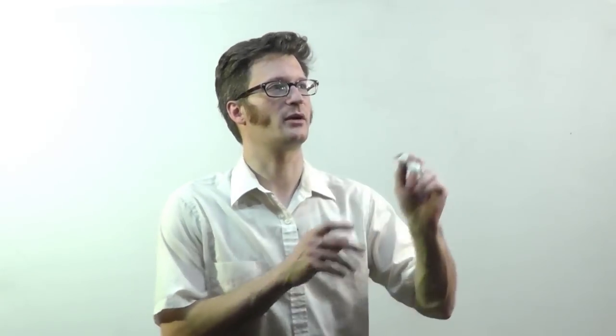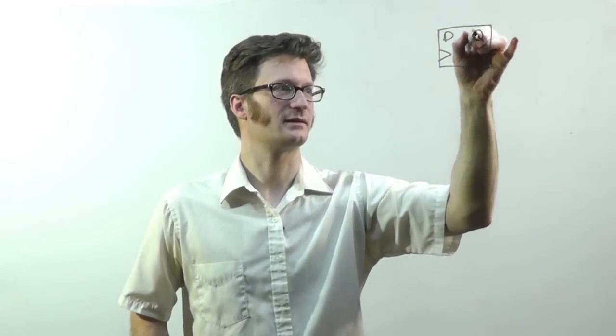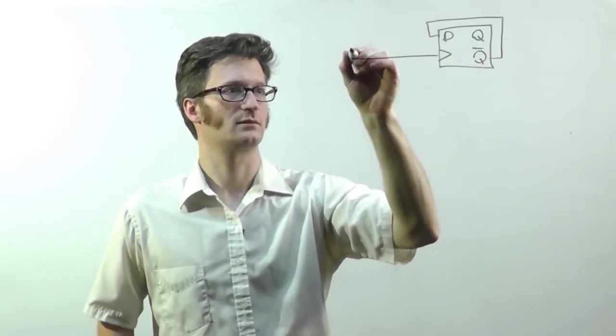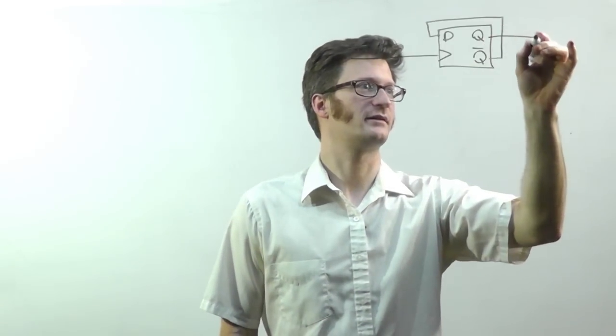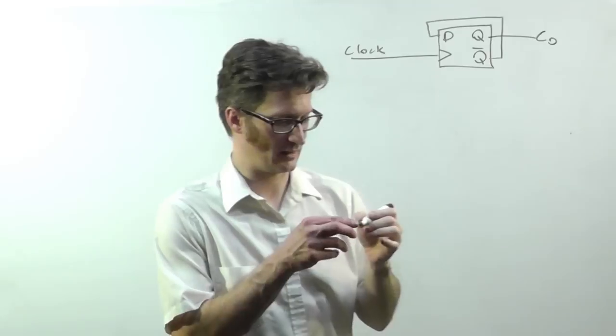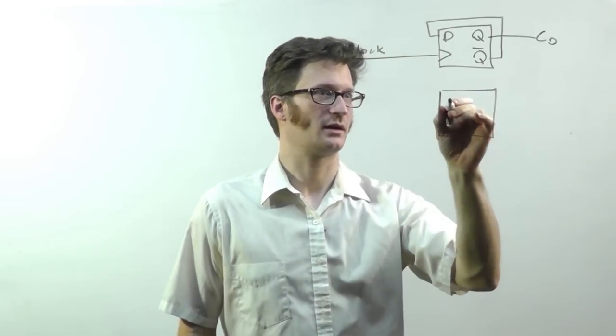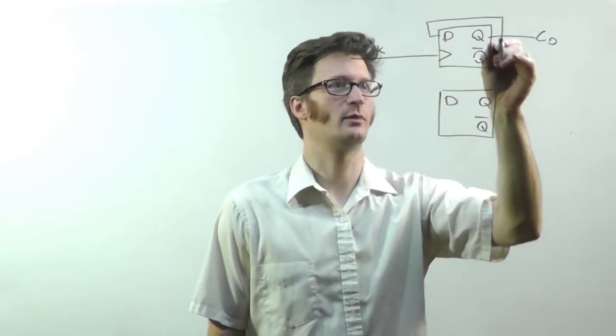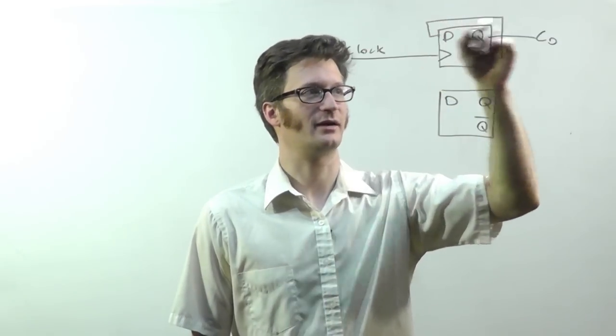So in an asynchronous counter, if I were to build that out of D flip-flops, it would look like this. All right, so right here this is my count zero output. And we're going to have another counter here. And pretty much the way this works is that Q bar feeds into D. So Q bar will always be opposite of what was on D the previous time.